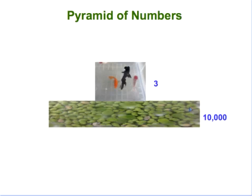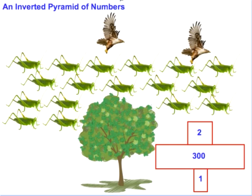Food chains can be pulled out of food webs to show this linear flow. In a very simple system — such as 10,000 duckweed per square meter of a pond supporting three goldfish that feed solely on the duckweed — we can put together a simple diagram called a pyramid of numbers. This shows the number of individual organisms within a population at each trophic level: 10,000 duckweed at the first level supporting three goldfish at the second.